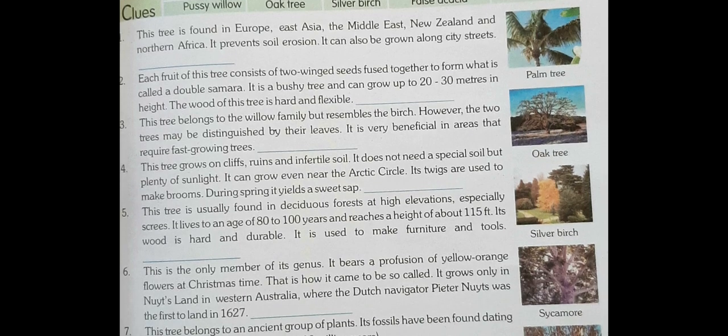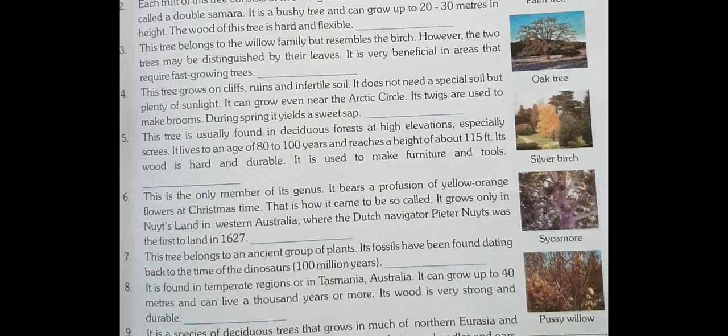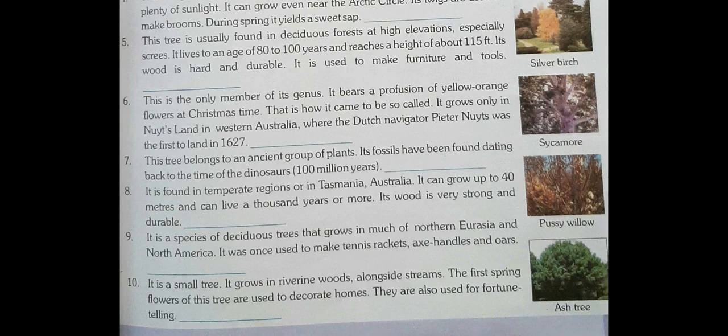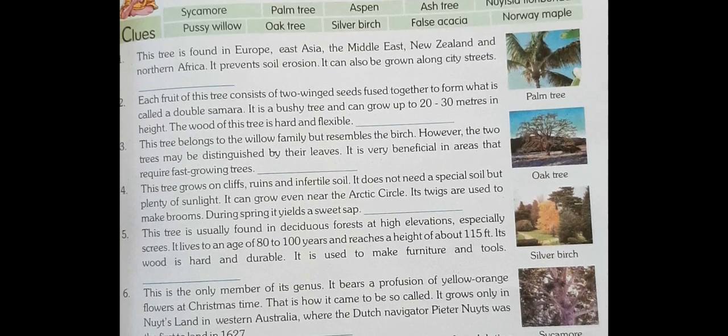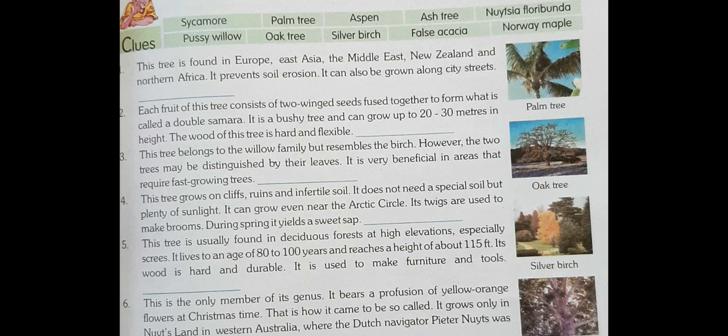Palm tree belongs to an ancient group of plants. Its fossils have been found dating back to the time of dinosaurs, so you can imagine how old this tree is. Oak tree is found in temperate regions or in Tasmania.